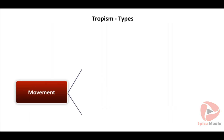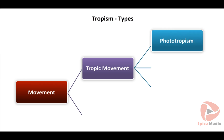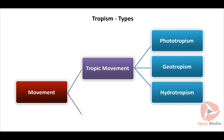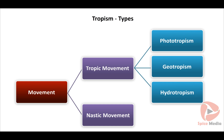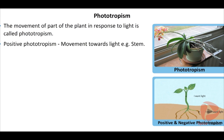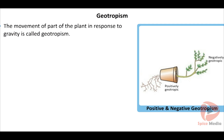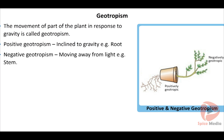Plants' movement is broadly classified into two categories. Tropic movement is movement of the part with the direction of the stimulus and influences growth. The movement of a plant part in response to light is called phototropism. When a part moves towards light, it is positively phototropic — example: stem. When it moves away from light, it is negatively phototropic — example: root. The movement in response to gravity is called geotropism. Roots are positively geotropic and stems are negatively geotropic.